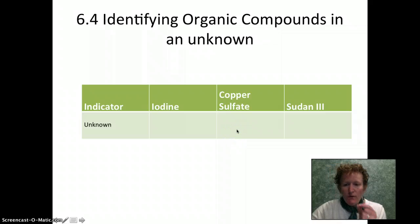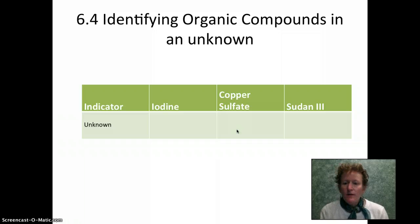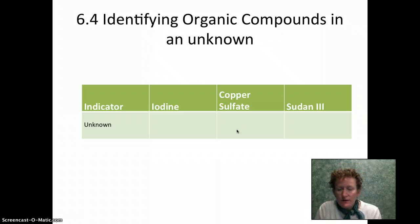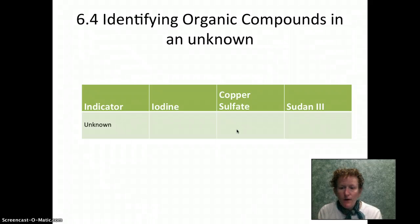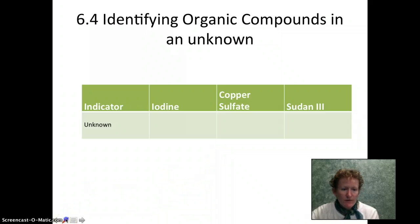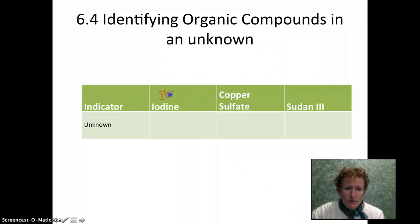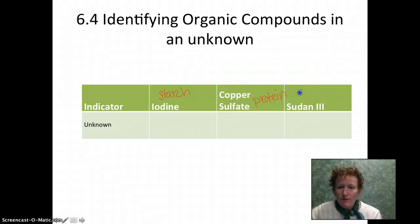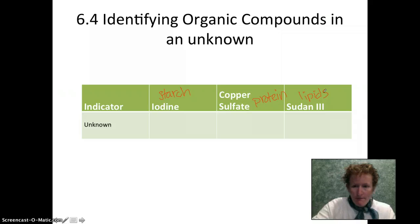Now that we know what the color changes look like - we knew there were lipids, we knew there was starch in the starchy water, and we knew there was protein in the egg white - we're going to take an unknown solution and look for all three macromolecules: starch with iodine, protein with copper sulfate, and lipids with Sudan 3.